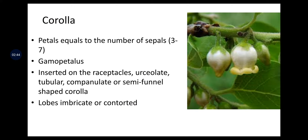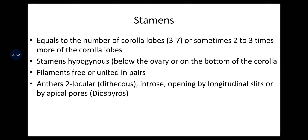Corolla: petals equal to the number of sepals, 3 to 7, gamopetalous, inserted on the receptacle. Corolla is urceolate, tubular, campanulate or semi-funnel shaped. Lobes imbricate or contorted. Stamens equal to the number of corolla lobes, 3 to 7, or sometimes 2 to 3 times more than the corolla lobes.